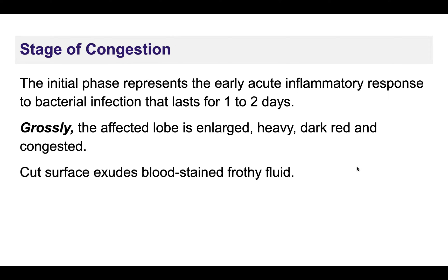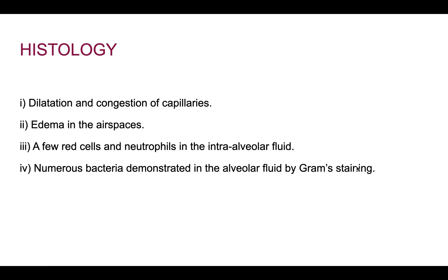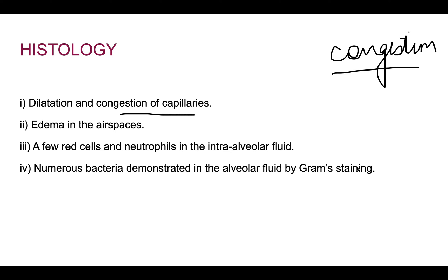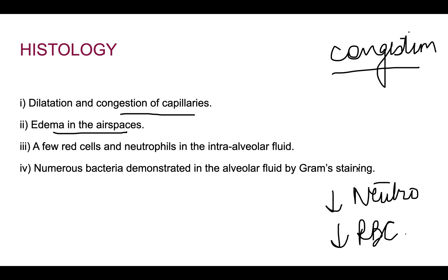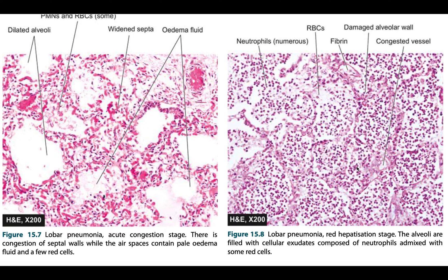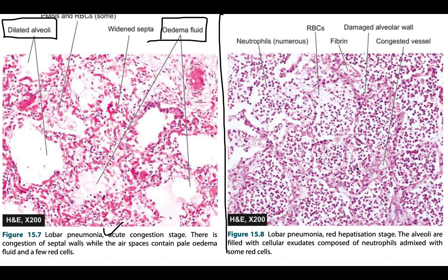The stage of congestion is a very early phase, lasting around one to two days. The affected lobe is enlarged and dark red in color. Pressing the cut surface will exude a bloodstained frothy fluid. Histologically, there is mainly congestion of capillaries and edema; however, neutrophils and RBCs are few at this stage. Congested blood vessels and dilated alveoli are present but RBCs and neutrophils are low in number.